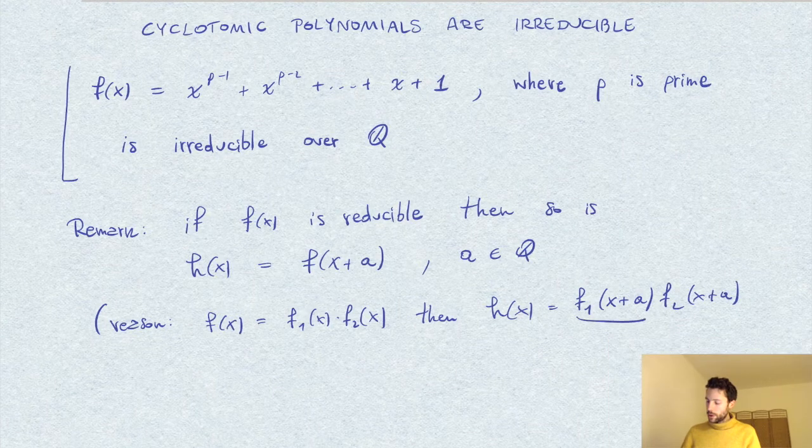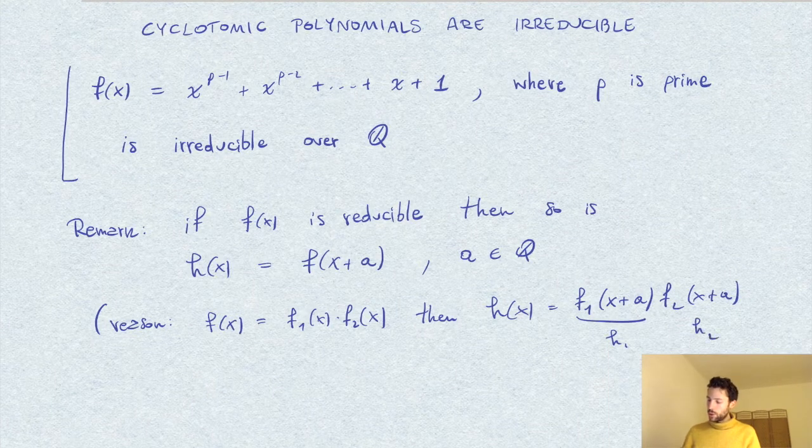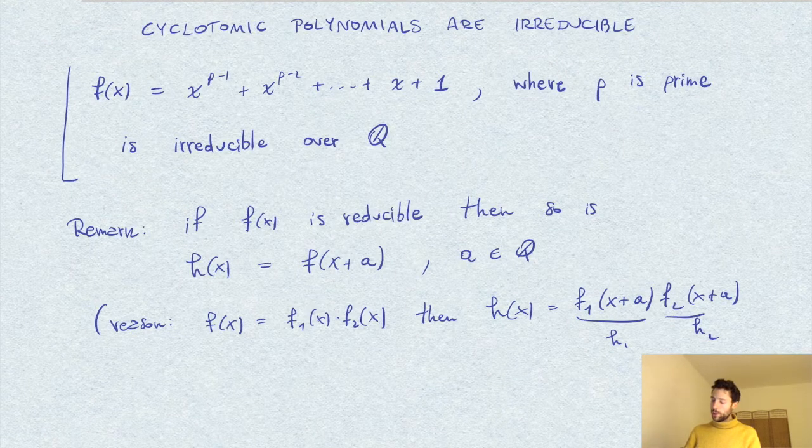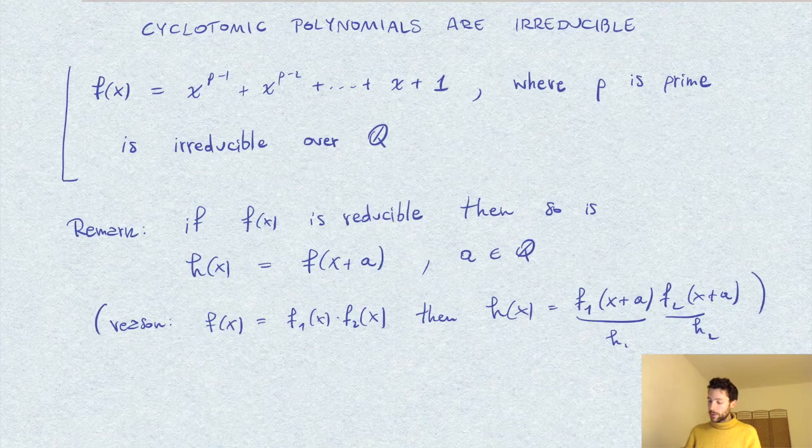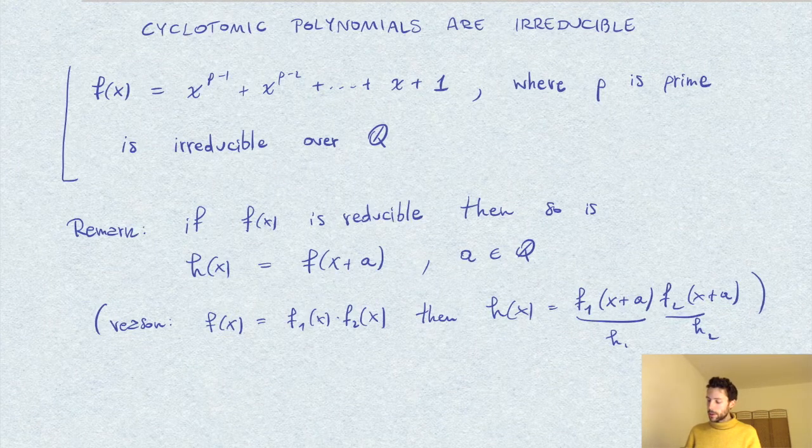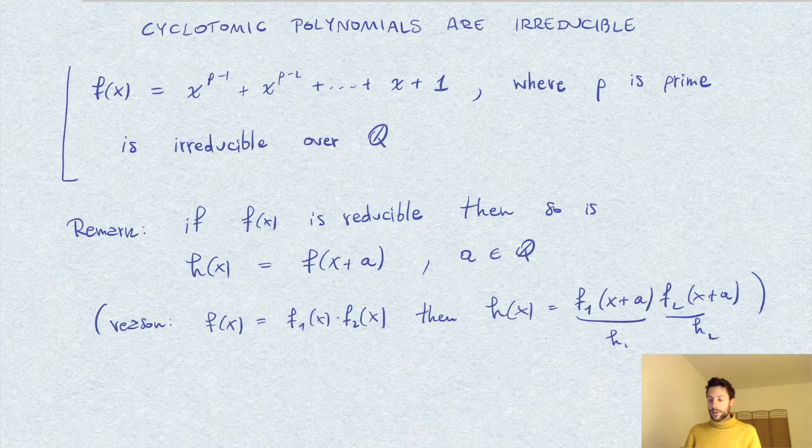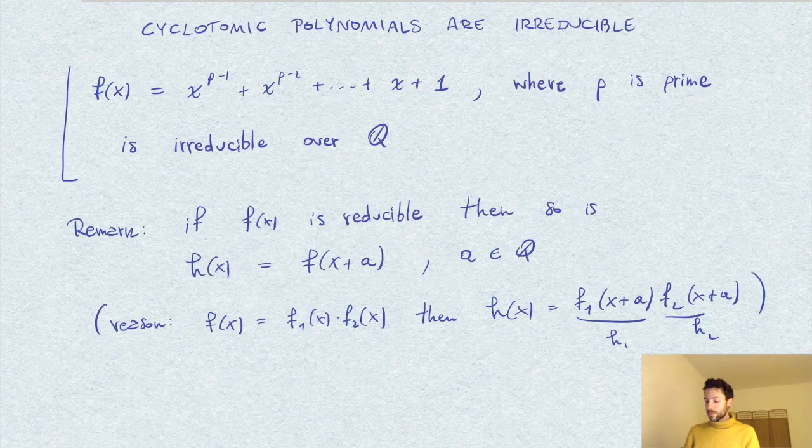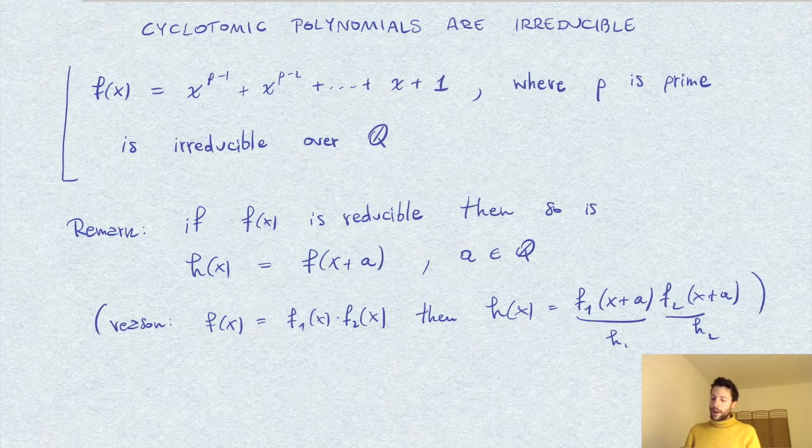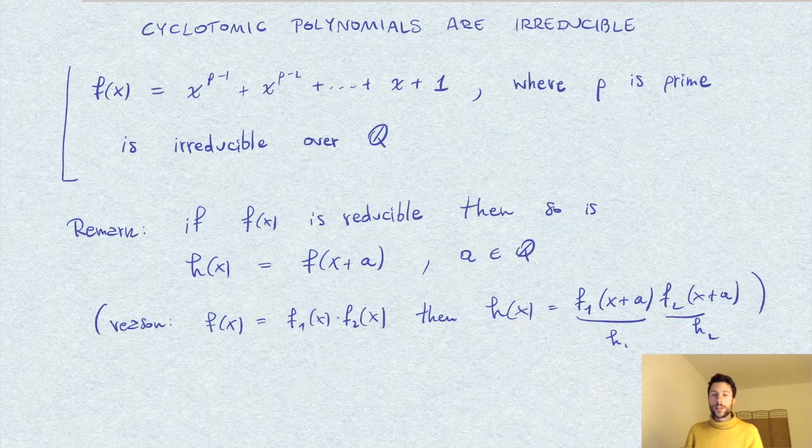And if you call this h1 and h2, then you have written h as a product of two polynomials of degrees strictly lower.